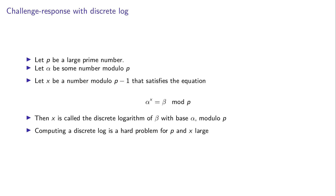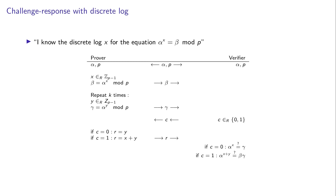The discrete log problem is the basis of the ElGamal encryption scheme and also the basis of many signature schemes. Now I'm going to show a protocol for a proof of knowledge where the prover demonstrates that he knows the discrete logarithm X for the equation alpha^X ≡ beta (mod P), given alpha, beta, and P sent in an initializing step.